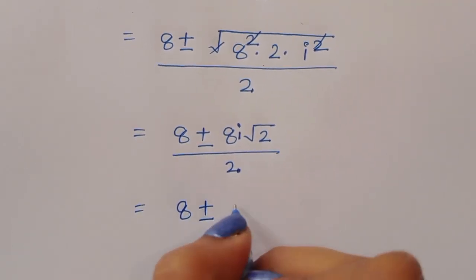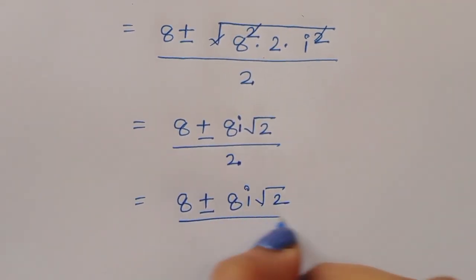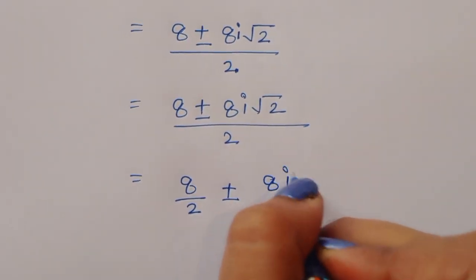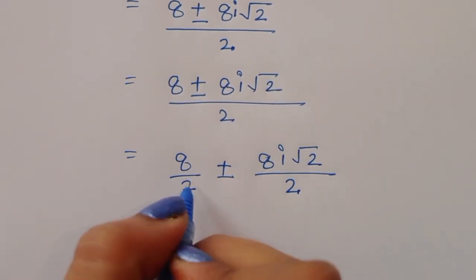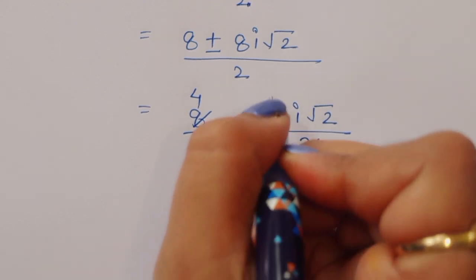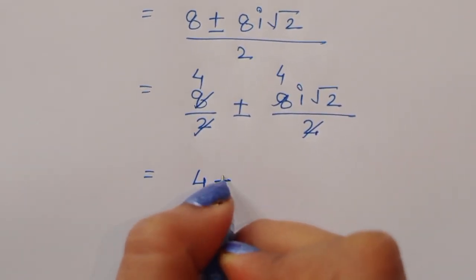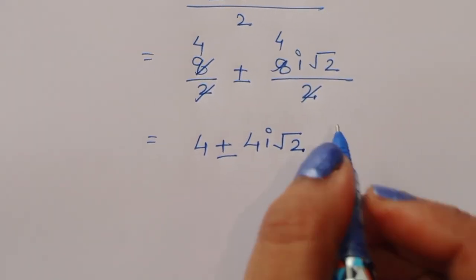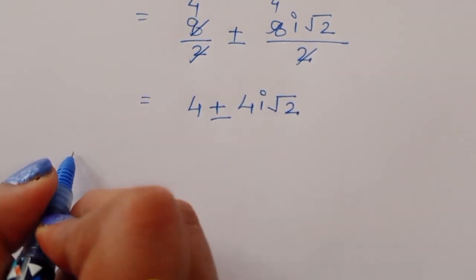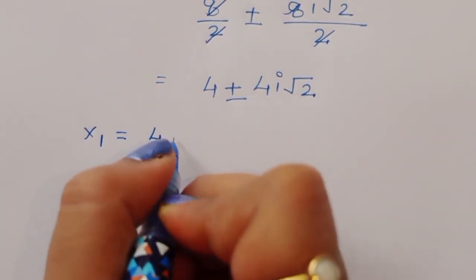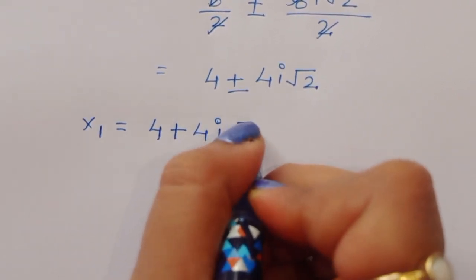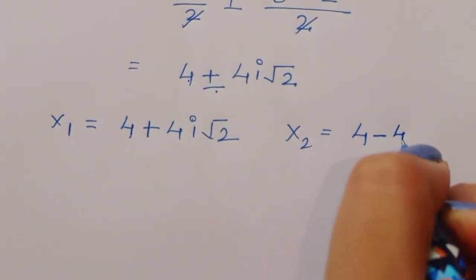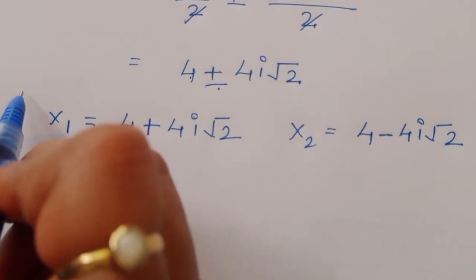Separating terms: 8 divided by 2 plus or minus 8i square root of 2 divided by 2, which gives 4 plus or minus 4i square root of 2. So we get two values: x1 equals 4 plus 4i square root of 2, and x2 equals 4 minus 4i square root of 2.